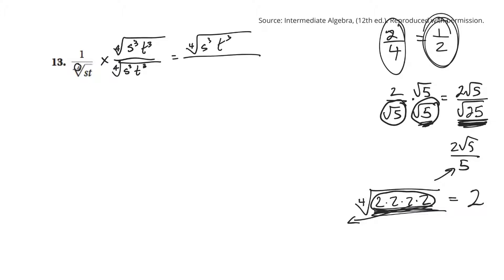But on the bottom, I'm going to have the 4th root of s times s cubed would be s to the 4th. And t times t cubed would be t to the 4th. Now, there's 4s's inside here. And so, I can bring 1s out. Yeah, there's 4t's. I could bring 1t out. And if I bring all that stuff out, there's nothing underneath the square root sign anymore. So, I just have an st.